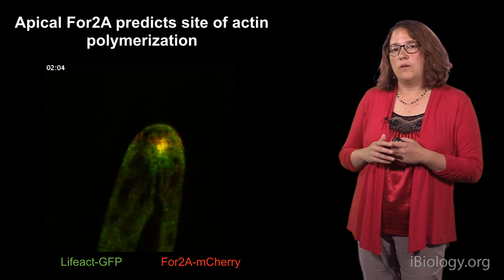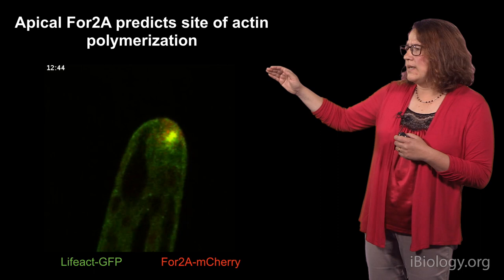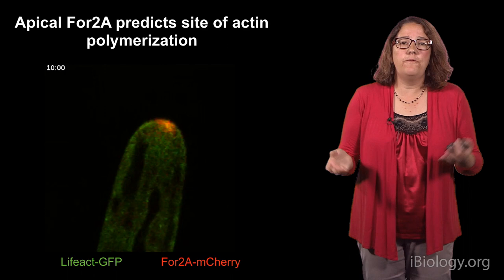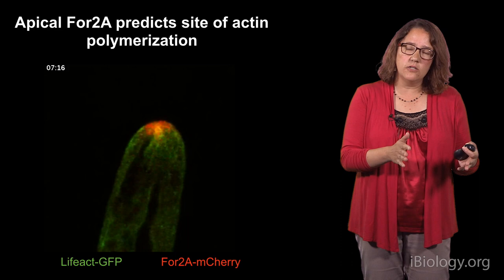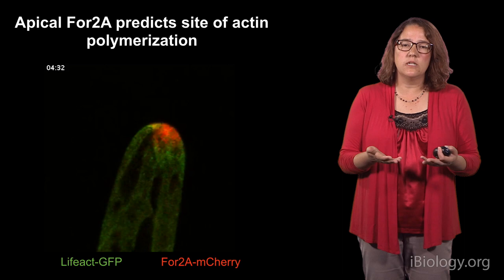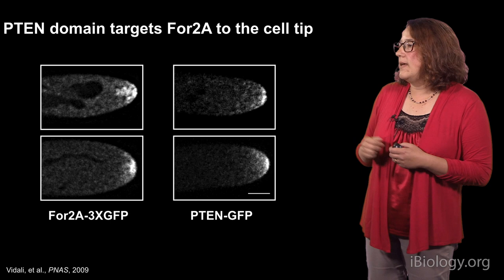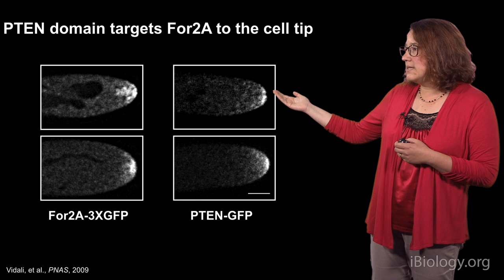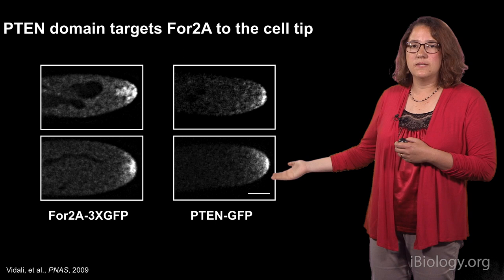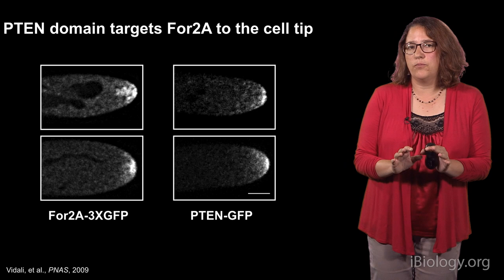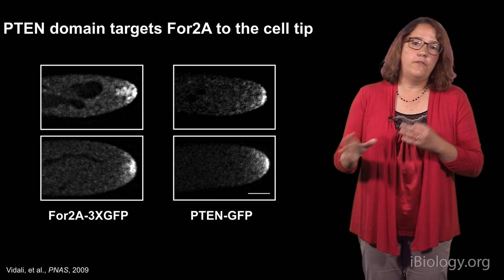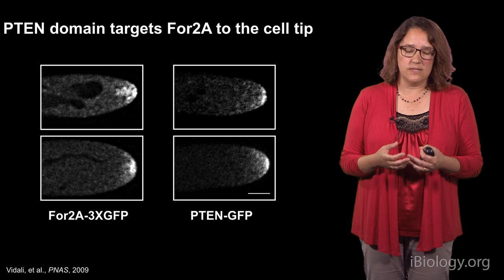We wanted to probe this with our complementation assay, but first we needed to understand how this formin specifically localizes to the tip. We guessed that the N-terminus was important, so we made a construct expressing just the N-terminus — the P10 domain — fused to GFP, put it into plants, and looked at what happened. The P10 domain alone is sufficient to target the formin molecule to the tip of the cell. This allows us to now play with the polymerization part of the protein while targeting it properly to the right place in the cell.